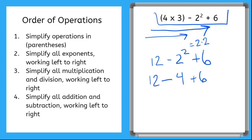We go straight to step four: simplify all addition and subtraction, working left to right. Twelve minus four gives us eight, plus six. Eight plus six gives us fourteen. We used our order of operations to simplify this expression. Now let's do a few problems together.